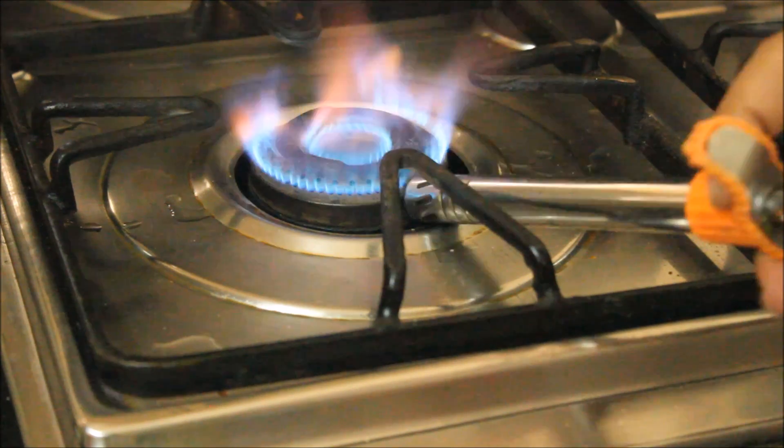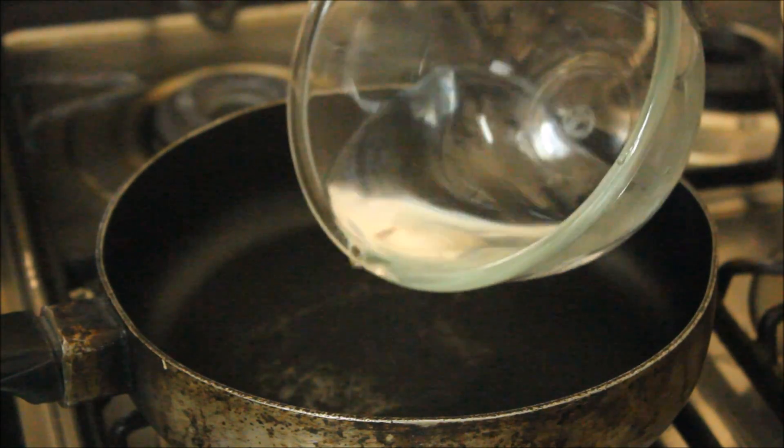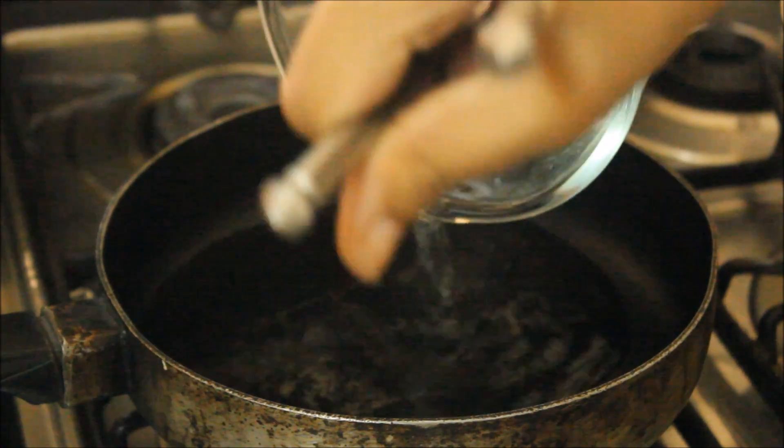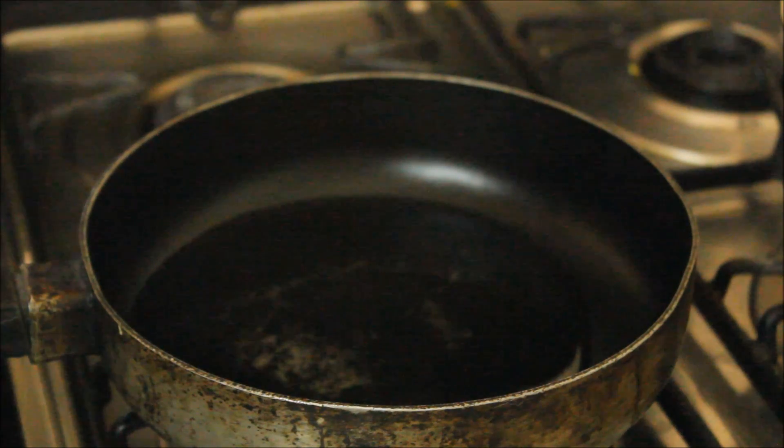Obviously it doesn't look any different because it's still water. But then you want to turn your flame on again and you want to put it on simmer or low. You want to take a non-stick pan, and then you want to pour in your distilled water. Make sure you use tongs because this is hot and you don't want to burn your hands.